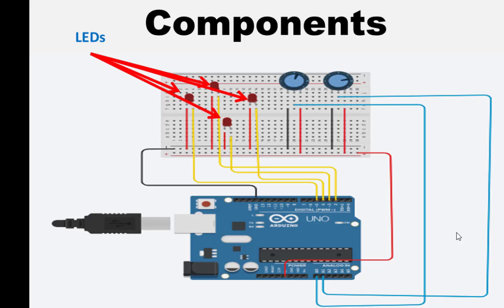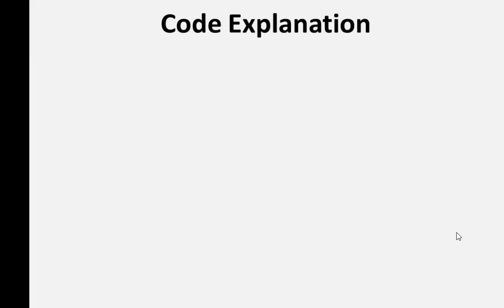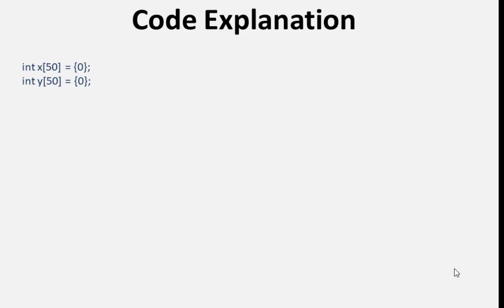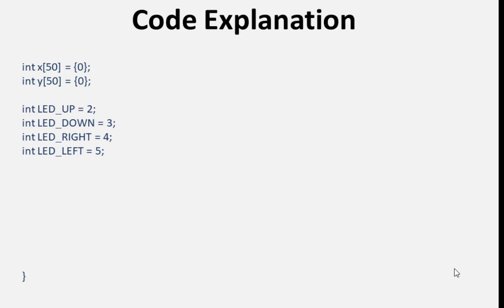This declares arrays x and y of integers with 50 elements each, initialized to zero. This section defines four integer variables — led_up, led_down, led_right, led_left — to store the pin numbers corresponding to LEDs representing different directions.